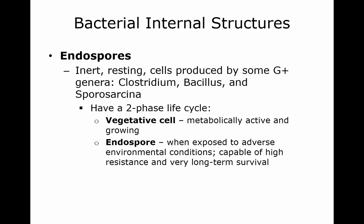Now, endospores. These are dormant resting cells and they're made by gram-positive bacteria — Clostridium, Bacillus, and Sporosarcina. They have a two-phase life cycle. The vegetative cell is the metabolically active growing cell. The endospore stage occurs when environmental conditions become bad, so that they can survive long term and resist those bad environmental conditions — they function in survival.